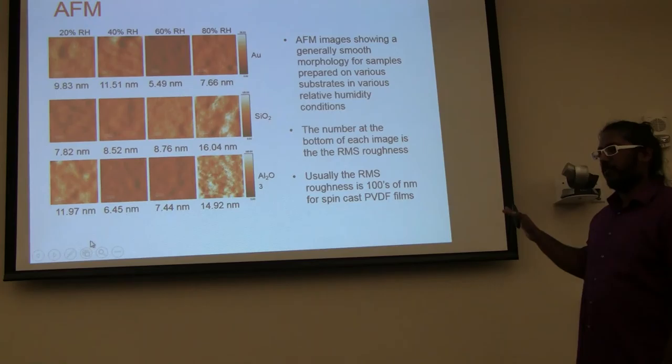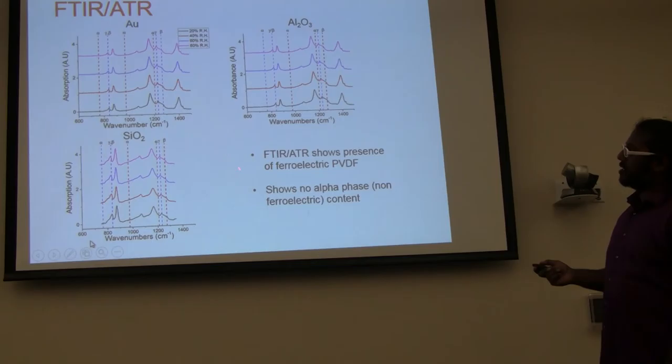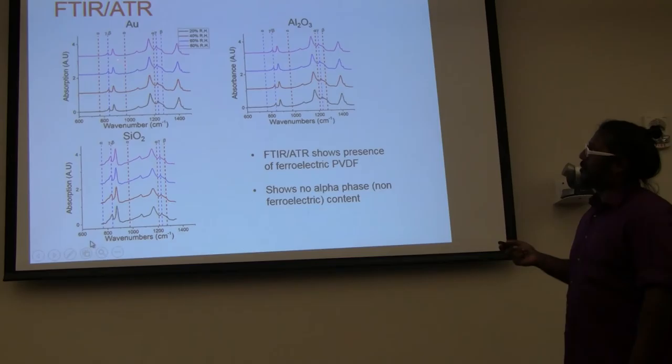So it's two microns by two microns. And that scale bar is 400 nanometers. And we can see that the films are really smooth actually. This is a measure of roughness that we call RMS roughness. PVDF films normally have a roughness of hundreds of nanometers. And we can see that all of our films are below 20 nanometers. So that's a significant improvement.